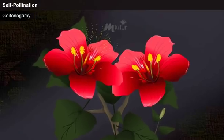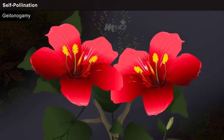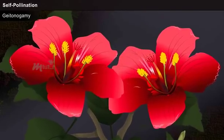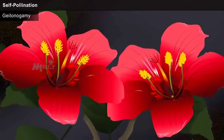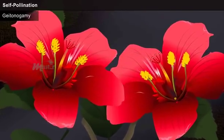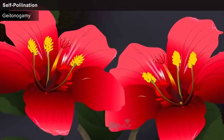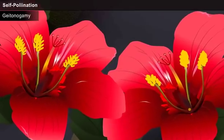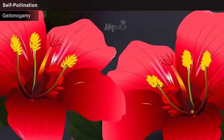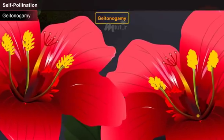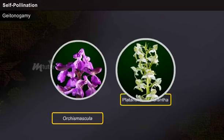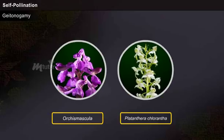Geitonogamy is a type of pollination that occurs in a plant which has several flowers on a single stem. When the pollen grains from one flower deposit on the stigma of another flower located on the same plant, it is called geitonogamy. Examples include Orchis mascula, Platanthera chlorantha, etc.